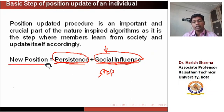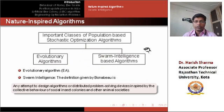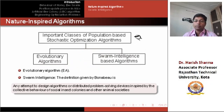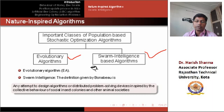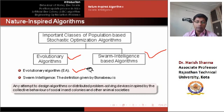In broad terms, population-based stochastic algorithms may be divided into two broad categories. One is the evolutionary algorithm, and the other is swarm intelligence-based algorithms. Evolutionary algorithms are based on Darwin's principle — the fittest will survive, that is, survival of the fittest individual in the next generation. Old population will die out and new population will survive.